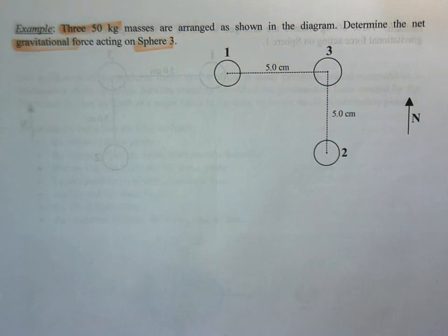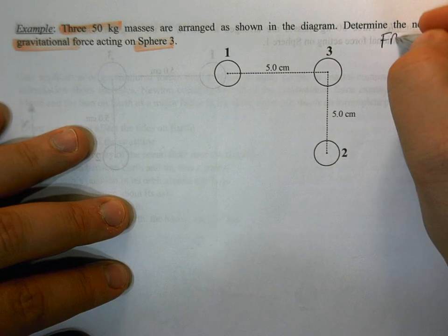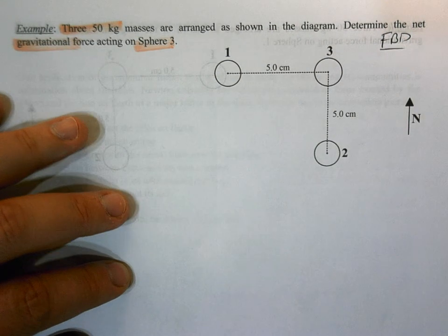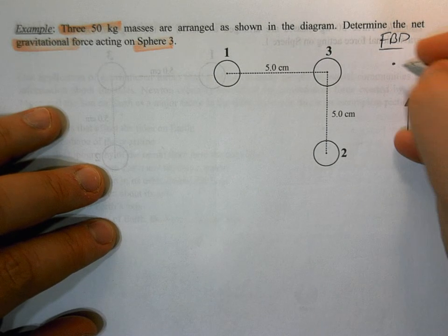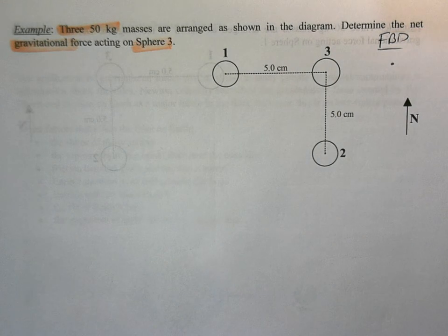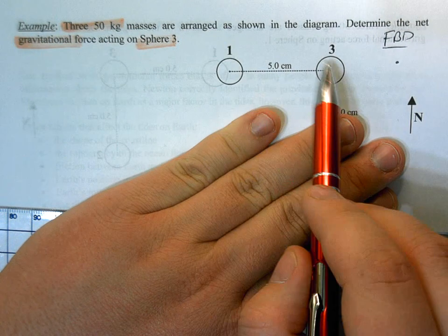So here's sphere 3 over here. All of these have equal mass. The first thing that we would like to do in a force problem is we want to draw our free body diagram. Now we're drawing it once again from the perspective of sphere 3.